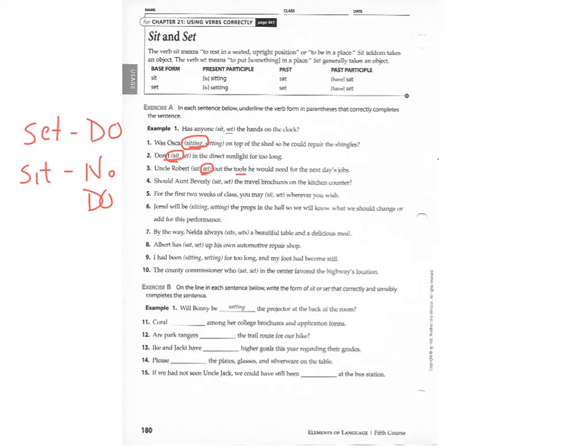We're going to use tools, so we have, we use set, so we have a direct object. For number four, should Aunt Beverly set the travel brochures on the kitchen counter? So brochures is our direct object, and that's why we use a form of set.